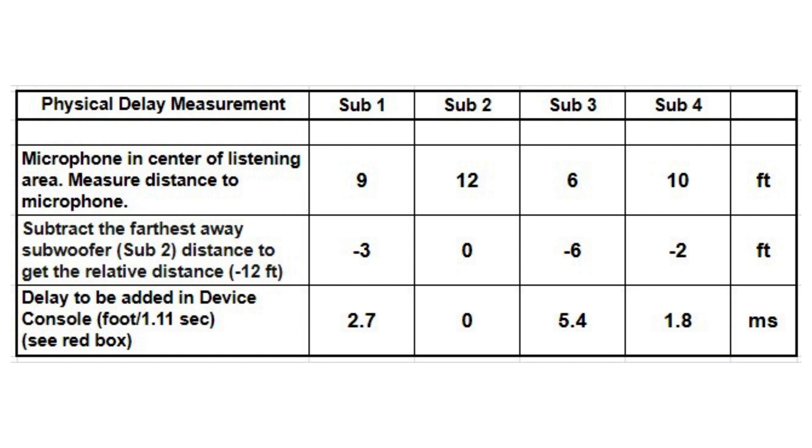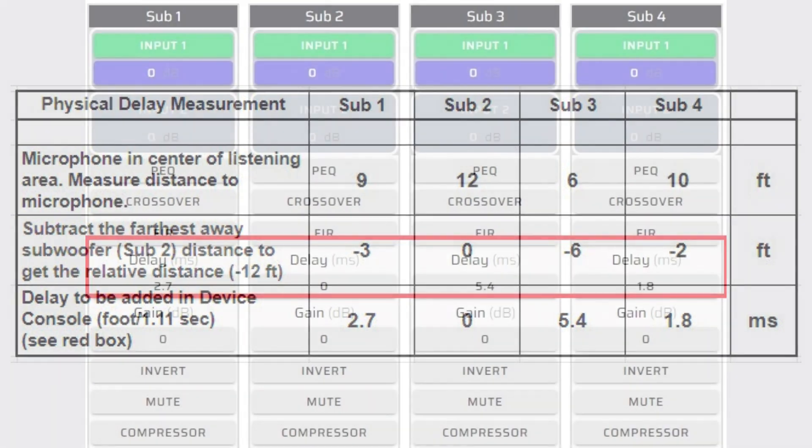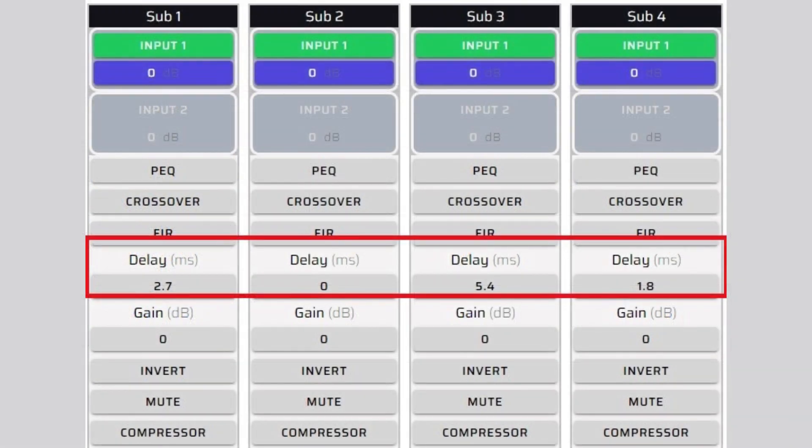Ensure you complete these delay calculations for each subwoofer in your system. This spreadsheet shows the delays calculated for our example. Once you have calculated the delays that need to be added to each of the subwoofers, you will insert the figures in the delay row of the MiniDSP device console. Keep in mind that the closer the subwoofer, the more delay will be added, ensuring that all subwoofers are equal to the delay of the subwoofer that is farthest away.